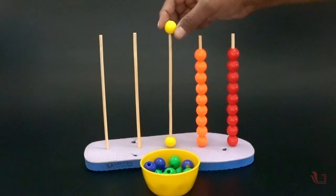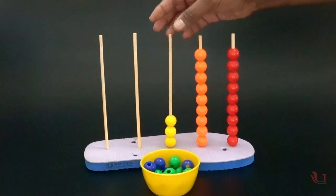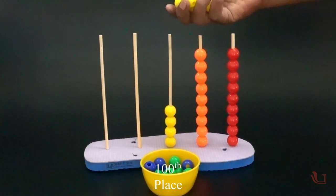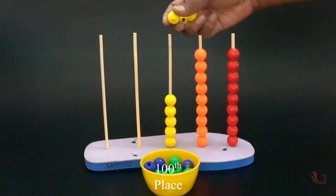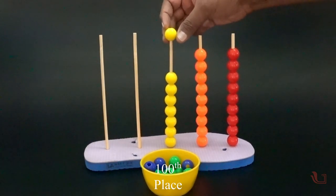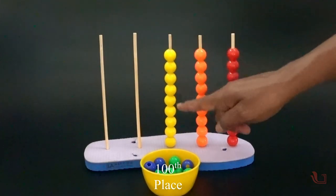Similarly, we can take 9 beads of a different color and insert them one by one into the third stick. Here, the value of each individual bead is 100. The place value of all the beads in the third stick is the hundreds place.